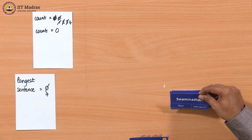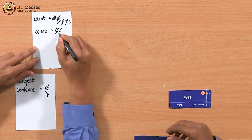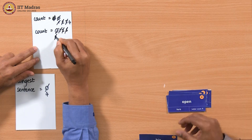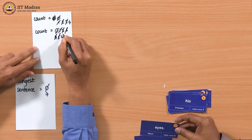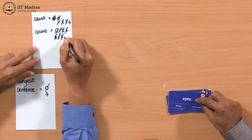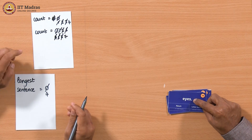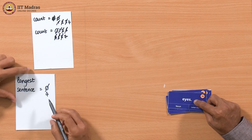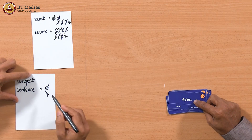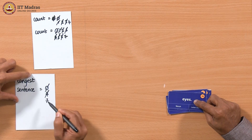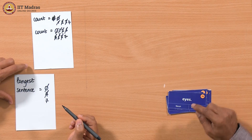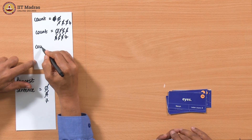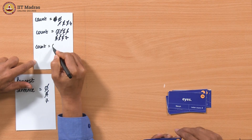Again we count: 1, 2, 3, 4, 5, 6 — the next card has a full stop, so we have seen seven words in this sentence. The previous longest sentence had four words. So now we replace four with seven. And again, that count has to get reset to 0 because we are seeing a new sentence now.